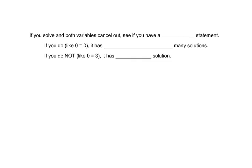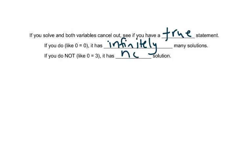If you solve and both variables cancel out, you need to see if you have a true statement. If you do, like 0 equals 0, it has infinitely many solutions — this is our same-line situation from the last chapter where the lines are on top of each other. If you do not have a true statement, like 0 equals 3, then there is no solution. This is like our parallel lines from the last section.